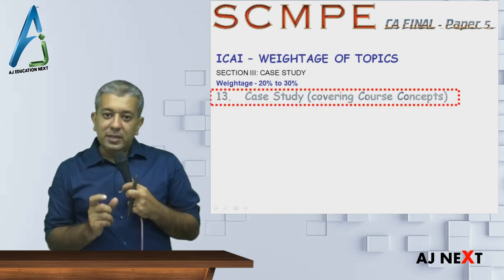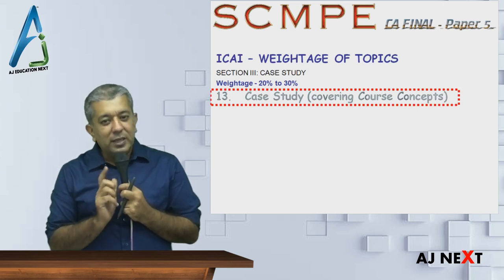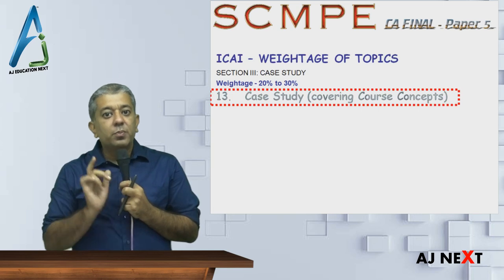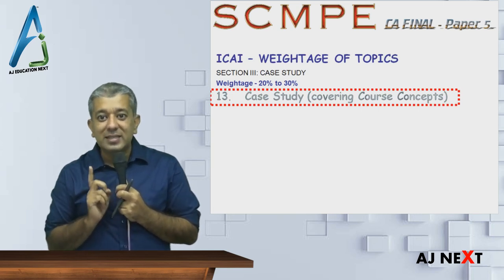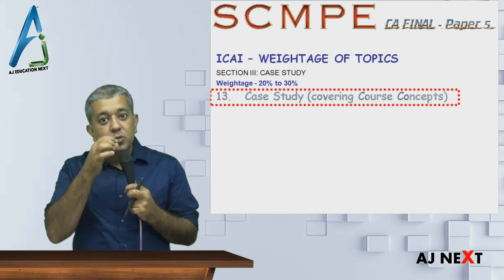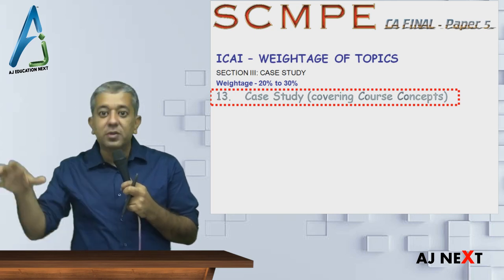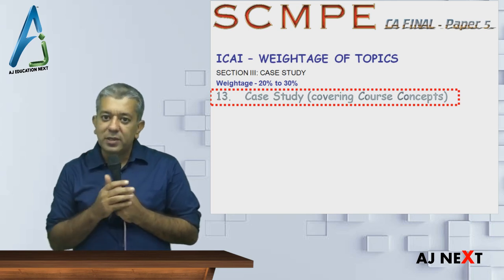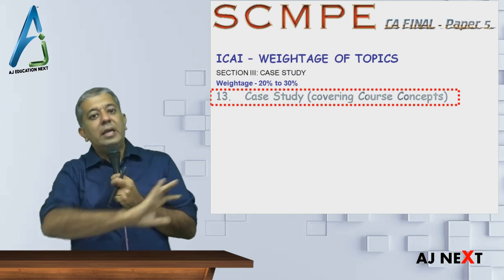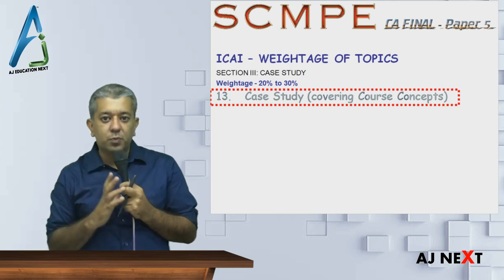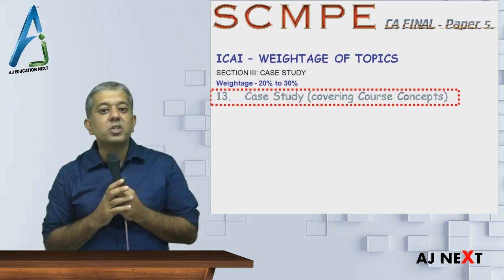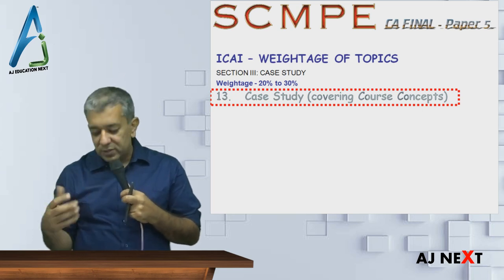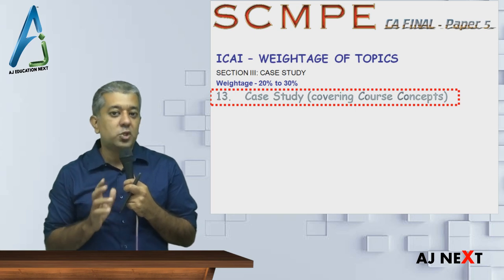The last chapter in ICAI books is chapter 13 - that is the case studies part. This case study is going to be your first question in the exam of 20 marks, plus there will be small case studies also in the further question paper. So around 20 to 30 marks you can be expecting from this. They will give you a business problem and ask you how to resolve it. This is one part that was never in the old course but is there in the new course.